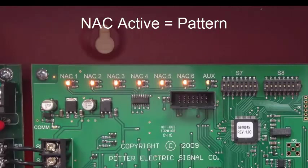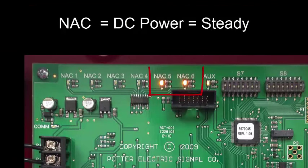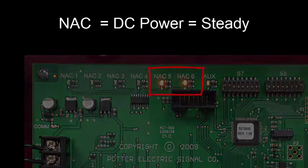When a NAC output is programmed for DC power, such as constant 24V, the LED indicator for that NAC output will be constant on as seen here.